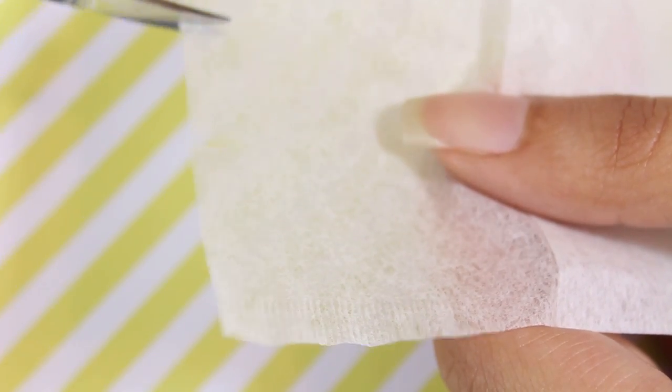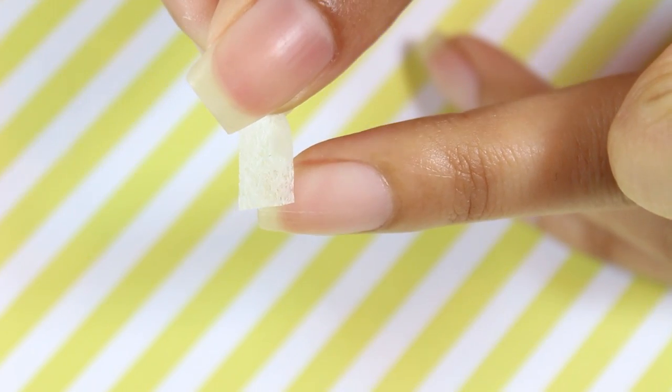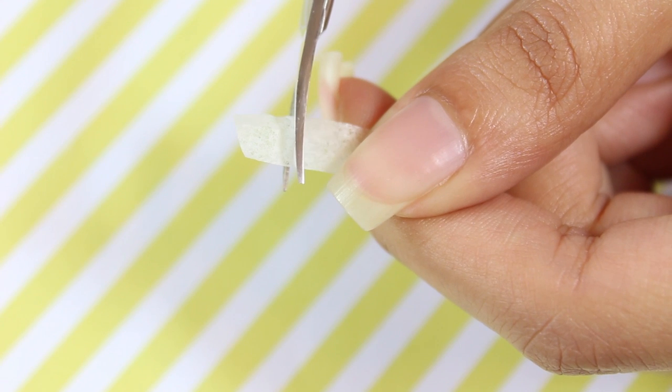Next I cut a piece of a tea bag that is large enough to cover the cracked part of the nail. The piece was too big so I cut it down a little more so that it only covers the cracked part of the nail.